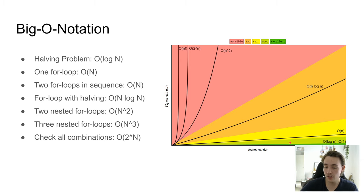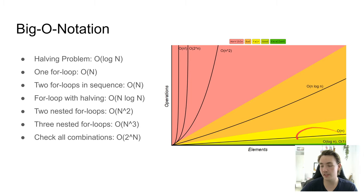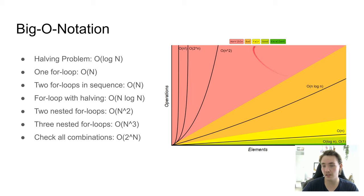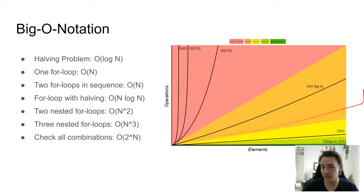Looking at a graph with elements on the x-axis and operations on the y-axis, we can see the different time complexities and how well they perform. The best algorithms have O(log n) or constant time. In practice we often use linear or O(n log n), which is fair but still much better than quadratic time or exponential time. If we have a large array and apply quadratic time complexity, we get a really steep curve in operations as the array grows.